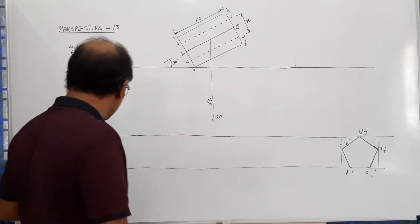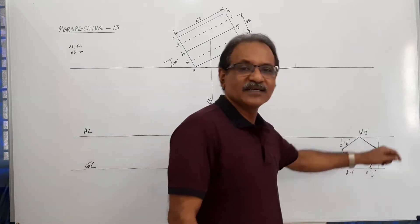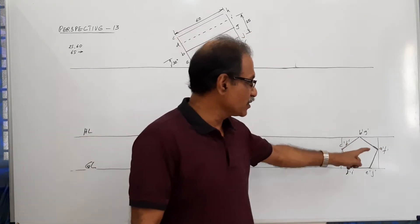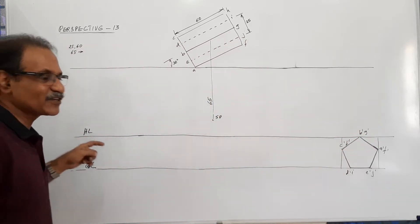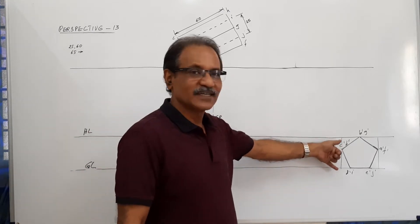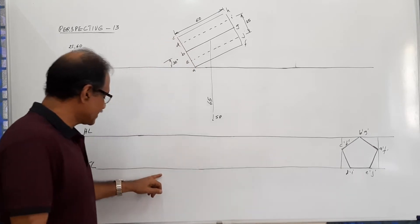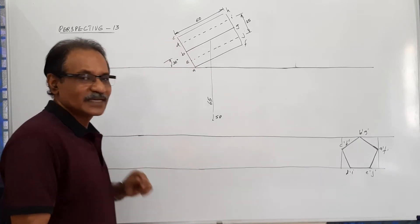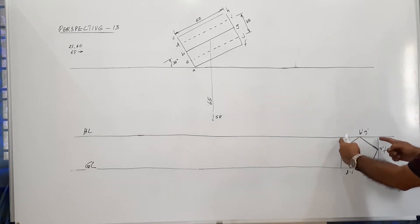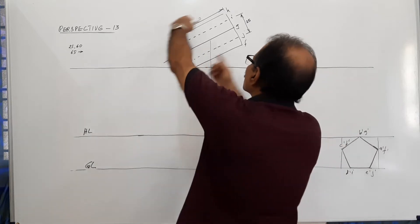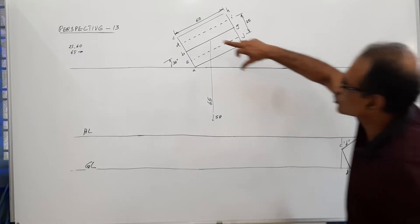You have to first draw a GL at the bottom of the paper. Draw the pentagon whose side is 25. Through the top corner draw a channel. Draw HL. Take this width and draw the plan.